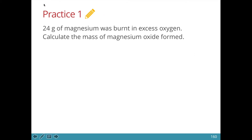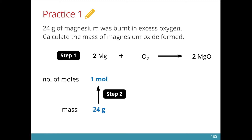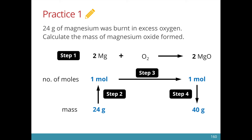Let's try another example. Step 1 is to write a balanced chemical equation. Step 2 is to convert the mass given into number of moles. Since magnesium and magnesium oxide are in a 2 is to 2 ratio, we find that there is 1 mole of magnesium oxide produced. To convert the number of moles to mass, we multiply by the Mr, which gives 40 grams.